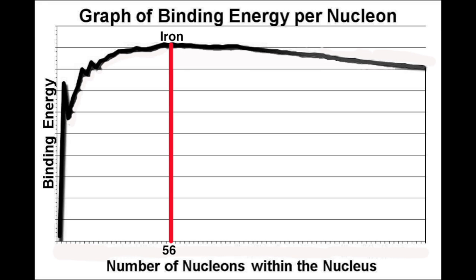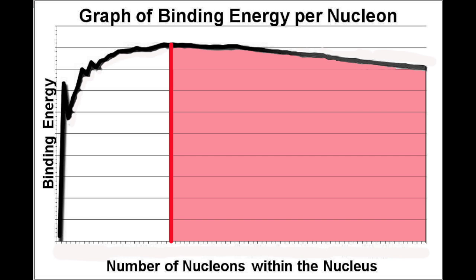In nuclear terms, the most stable element is iron, with 56 nucleons within its nucleus. That's 56 neutrons and protons altogether. Energy has had to be provided to create any atom which is larger than iron. And this generally happens within a supernova.